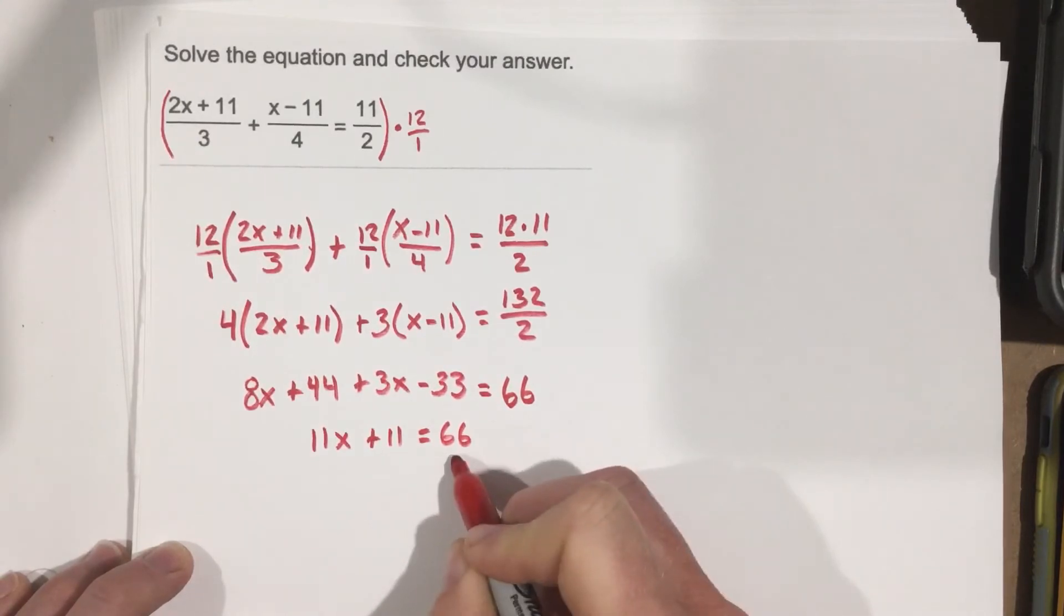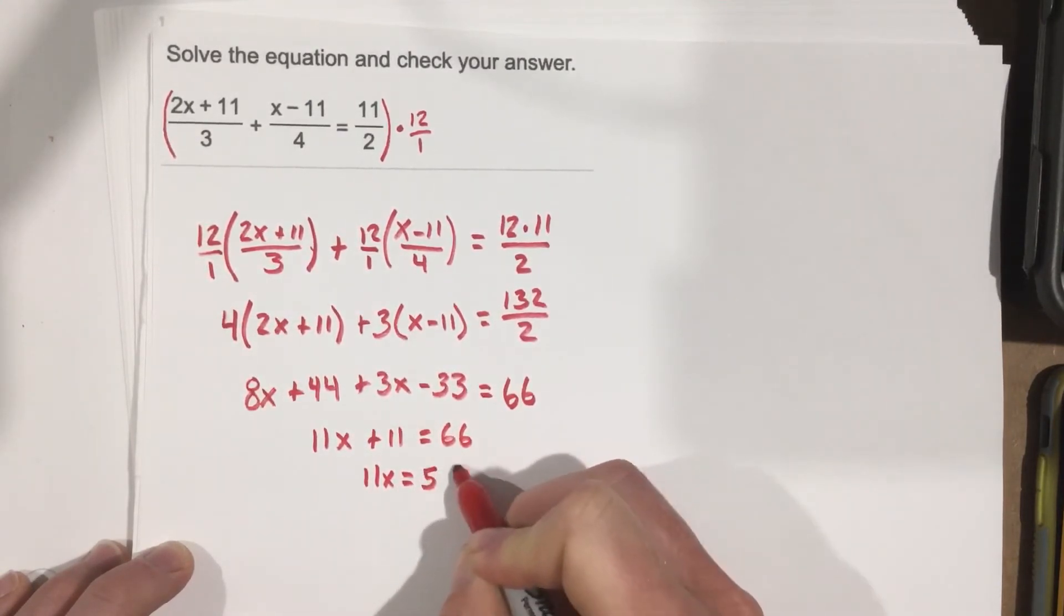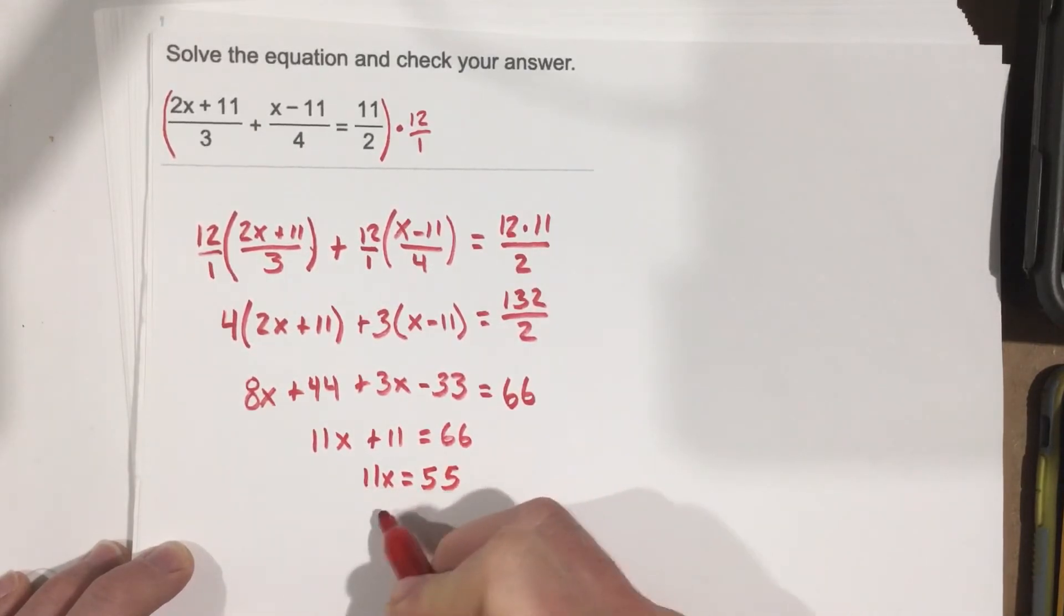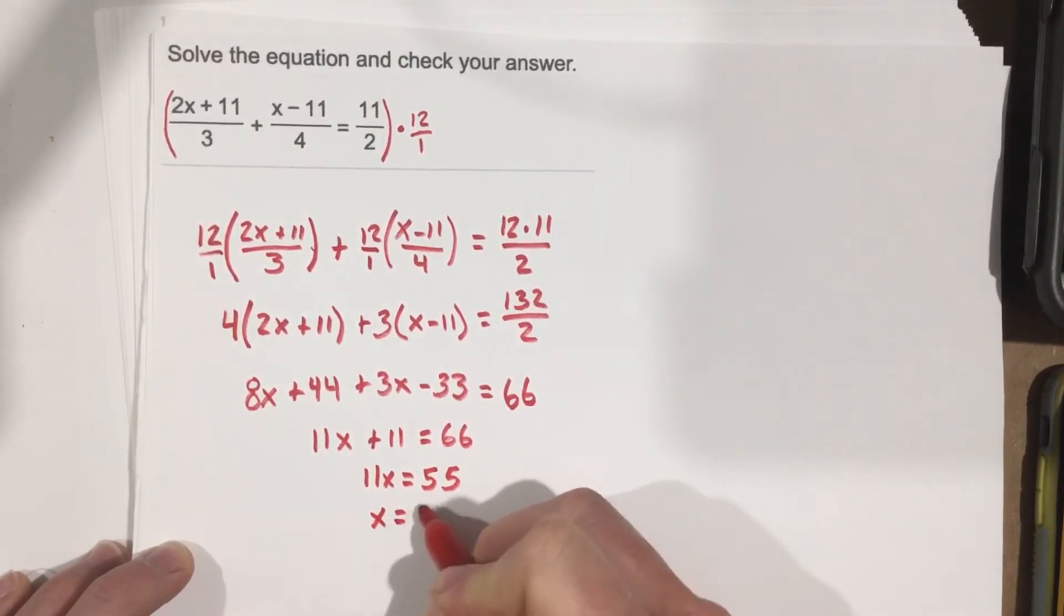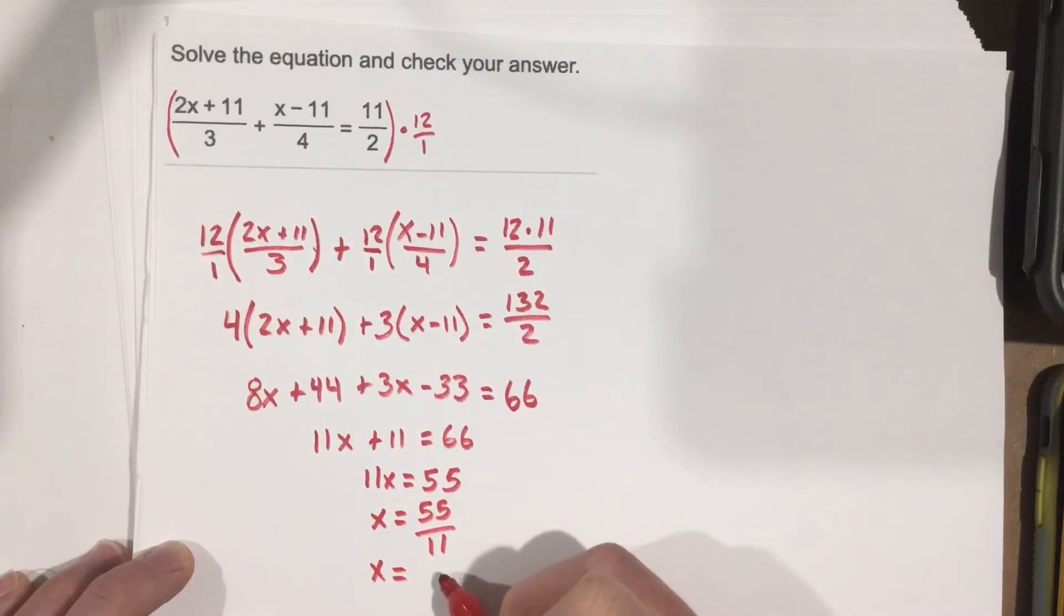Let's subtract 11. So we end up with 11x equals 55. Divide by 11 on each side. And we get x equals 55/11, which equals 5.